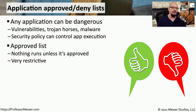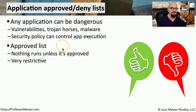One philosophy on how to implement this type of control is through the use of an approved list. That means that the IT security team would create a list of applications that was approved, and no other applications would be able to run on that endpoint. This is obviously a very restrictive list, and you would have to go to the IT security team if there's any software that you need installed that may not currently be on the approved list.